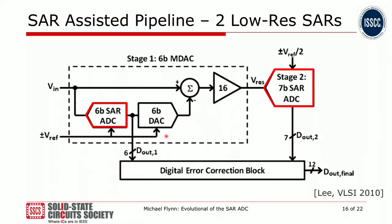One of those is the SAR-assisted pipeline. A bunch of those were presented around 2010 and later. These cascade two low-resolution SARs — in this case a 6-bit SAR and a 7-bit SAR in a cascade. The advantage of this is that now each SAR is low-resolution, so the performance requirements for the comparator, and for a lot of other things, are greatly relaxed.